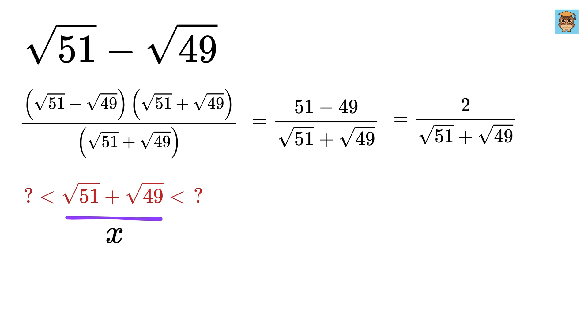To do this, we will find the value of x square, which will be square root of 51 plus square root of 49 whole square. We will use this a plus b whole square formula here to get 51 plus 49 plus 2 multiplied by square root of 51 multiplied by square root of 49.